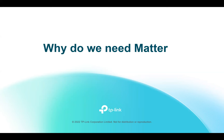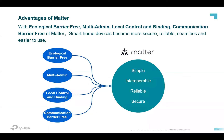Let's learn why we need Matter and why the Matter protocol has been released. Based on the background of Matter, we can identify four main advantages: ecological barrier-free, multi-admin, local control and binding, and communication barrier-free. These benefits make smart home devices even more secure, reliable, seamless, and easier to use.